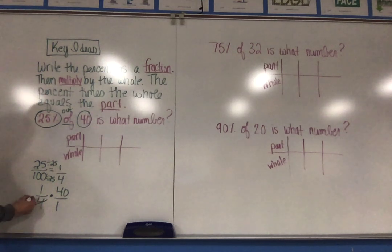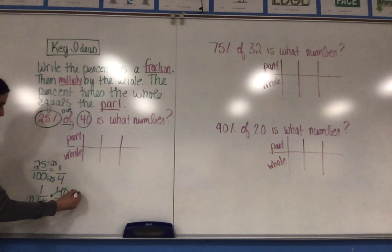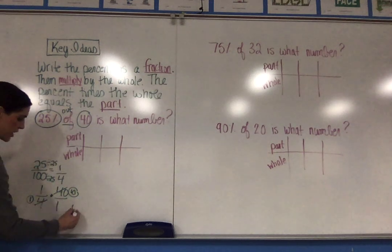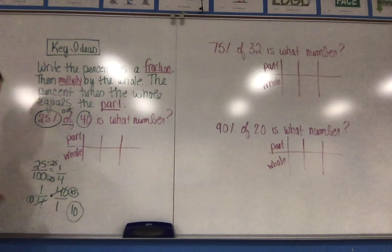So 4 divided by 4 is 1. 40 divided by 4 is 10. And so you see that 25% of 40 is going to be 10.